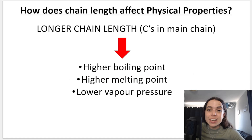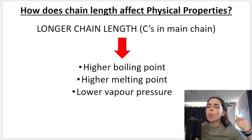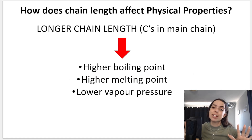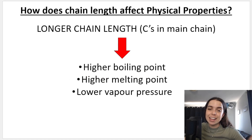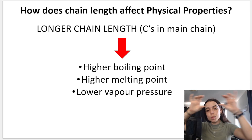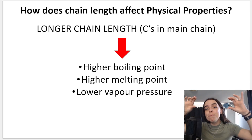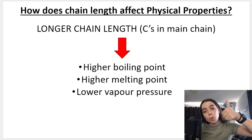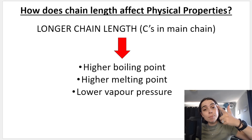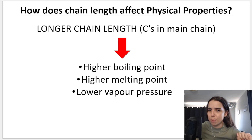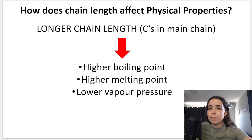The first thing you need to know — and I'll give you a proper full summary later in the video, so you don't want to miss that — is that the longer the chain length, meaning the more carbons in the main chain, the higher the boiling points, the higher the melting points, and the lower the vapor pressure. But why? And you need to know why.